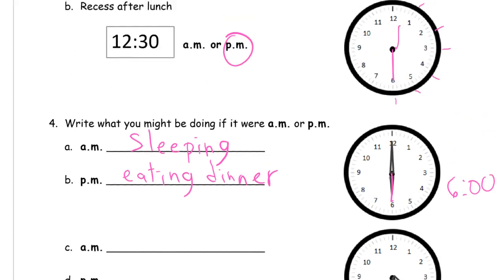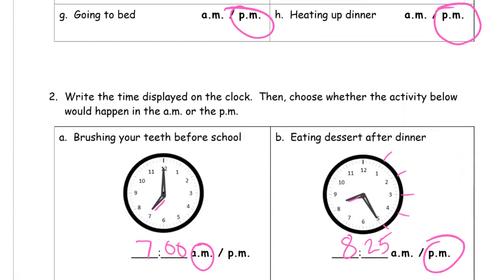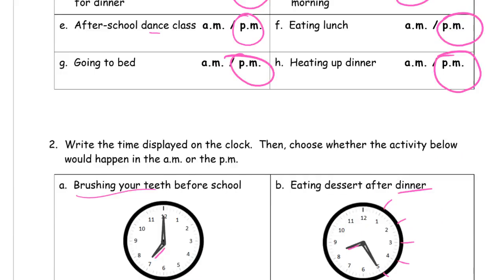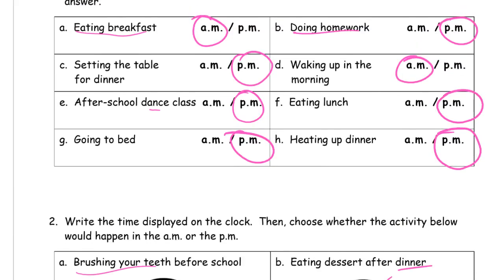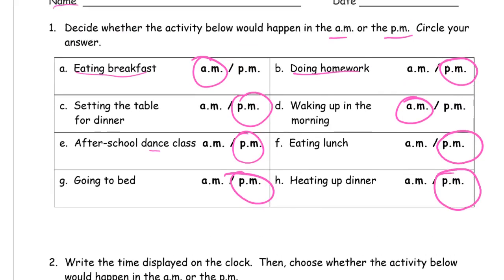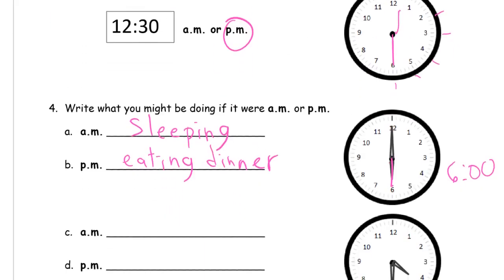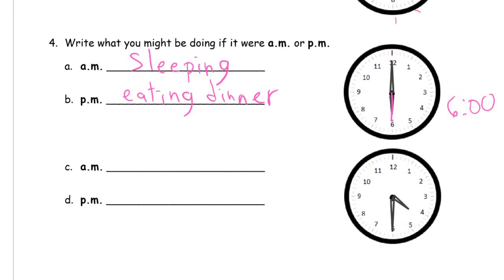And if you're not sure how to spell these words, just make your best guess. And you can look at some of the stuff like here. There's dinner and there's brushing your teeth. And here's a whole list of things. And for question 1, doing homework, waking up in the morning, eating lunch, heating up dinner, going to bed, all that stuff. You can just copy that if you really want to. So that's right there for you to use, that first page.